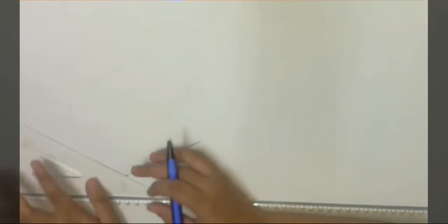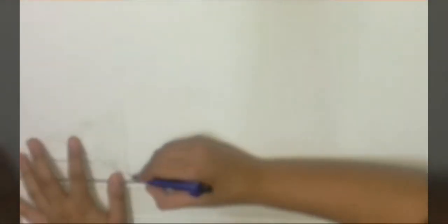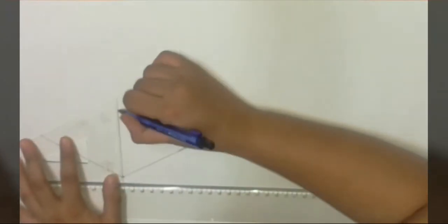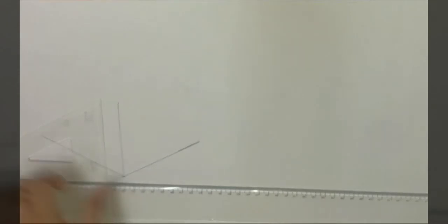Then similarly, we will take the same inclination line on the other side, parallel to it. These are construction lines so they should be light. They can be erased at any moment of time.